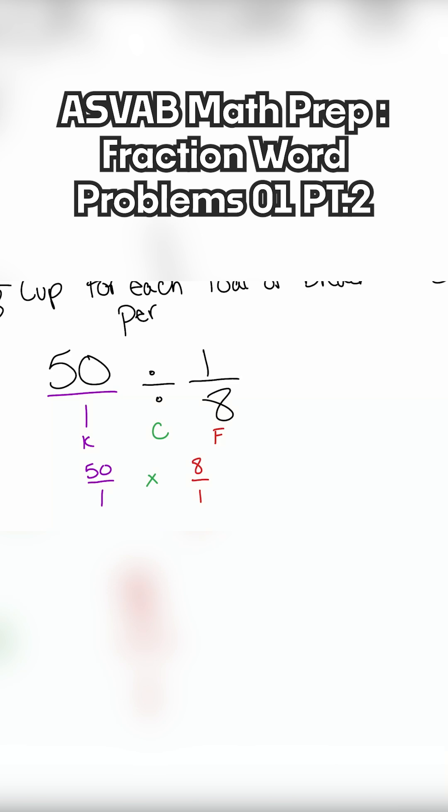50 over one is the same thing as 50. Eight over one is the same thing as eight. This is just going to be 50 times eight. 50 times eight is what? Correct. 400.